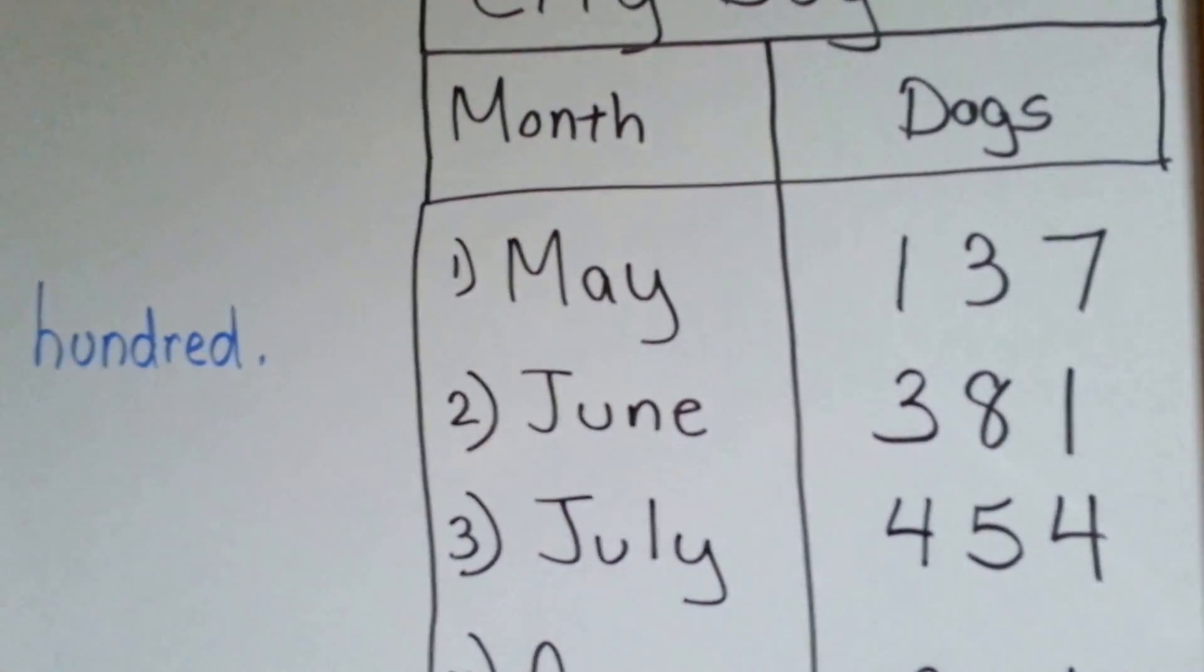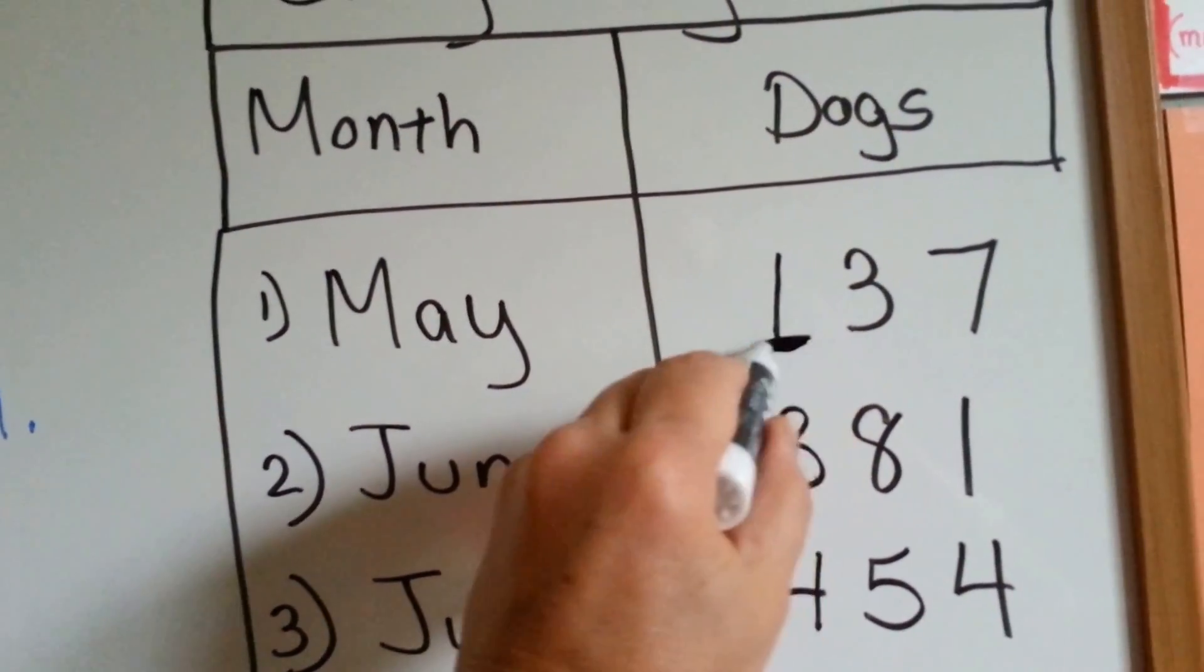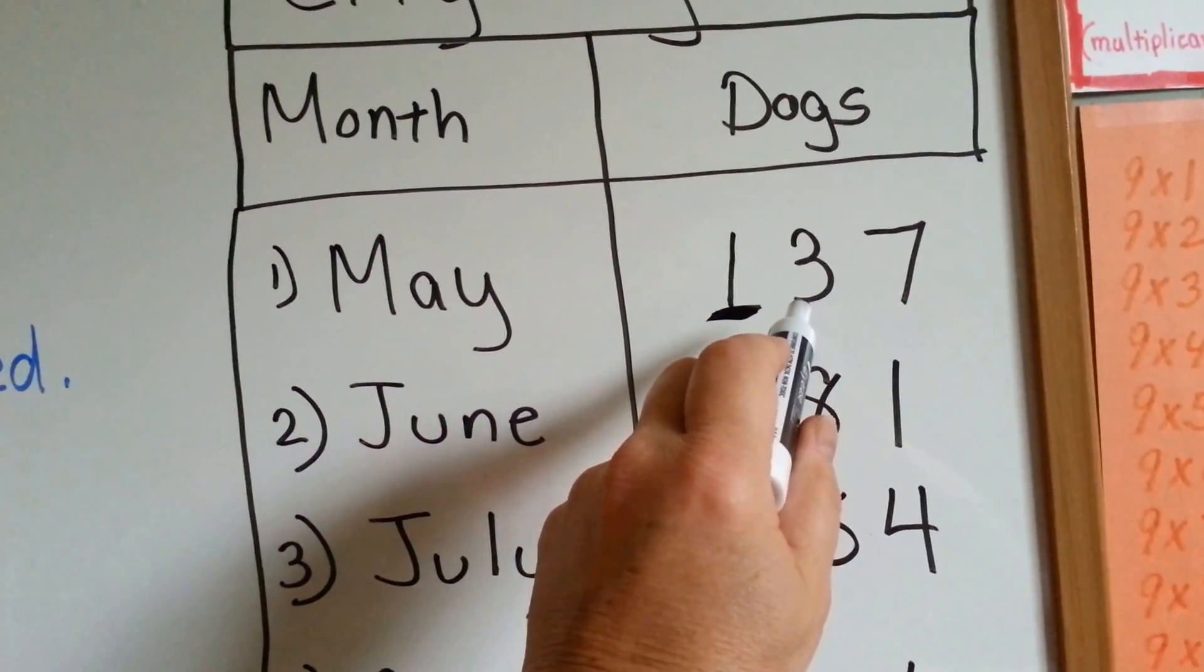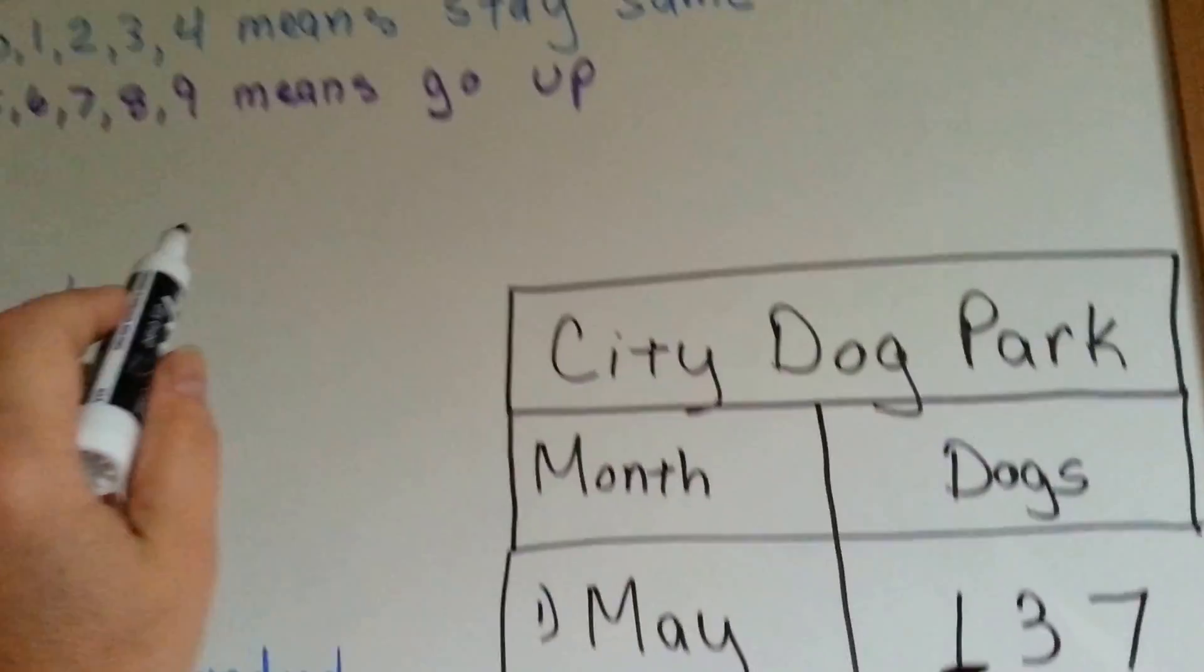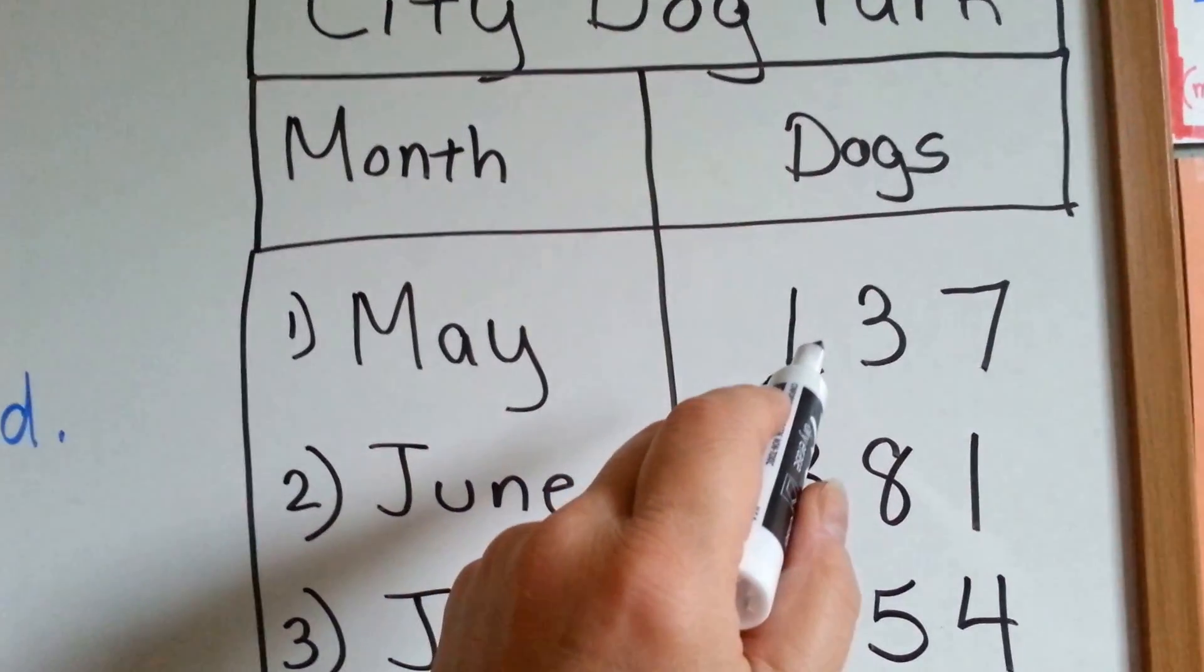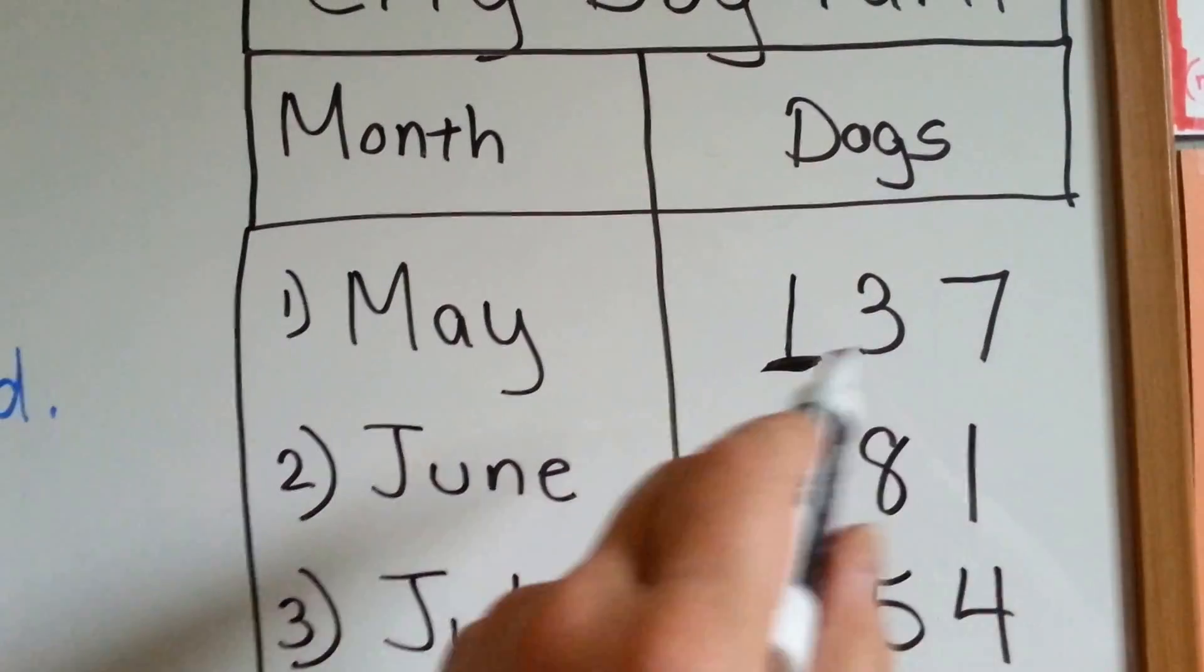So if we're rounding to the hundreds, here's the hundreds place. This is the number to the right, the 3. So the 3 is going to tell it what to do. It's going to stay the same. So the 1 is going to stay the same. When the 3 is done, it and the 7 become zeros.